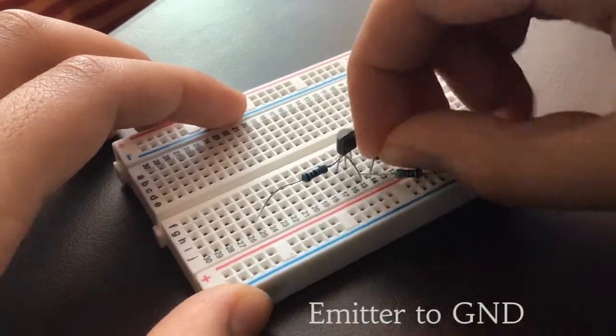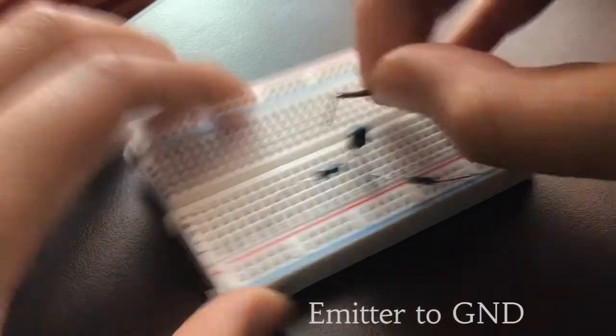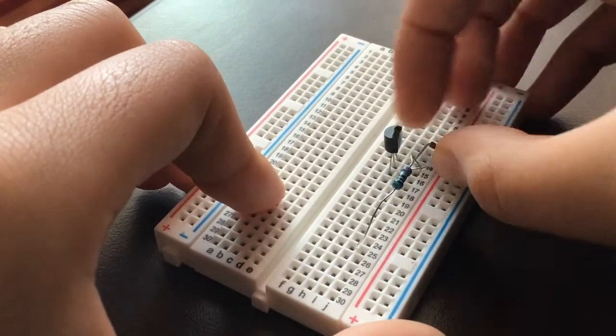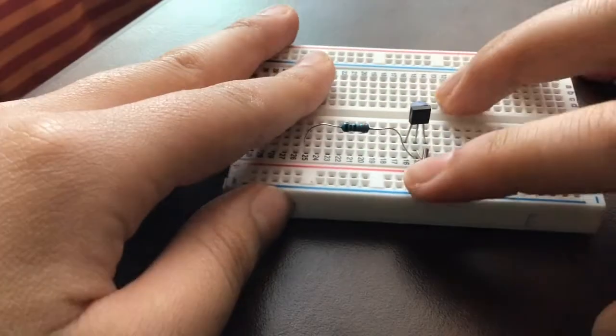After that you want to take a wire and connect the transistor's emitter to the negative rail of the breadboard or ground.